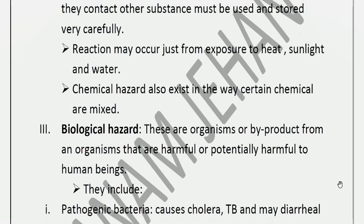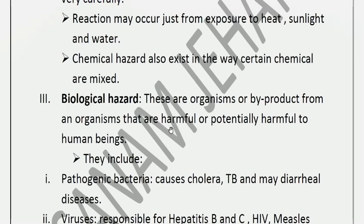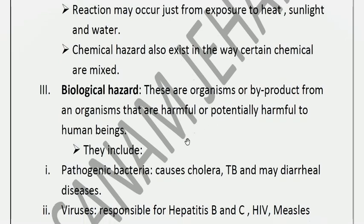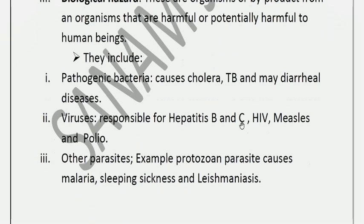The third type is biological hazards. Biological hazards are other organisms or byproducts of organisms surrounding human beings that adversely affect health. The first example is pathogenic bacteria. There are both beneficial bacteria and pathogenic bacteria. Pathogenic bacteria cause many diseases such as cholera, tuberculosis, and diarrheal diseases.